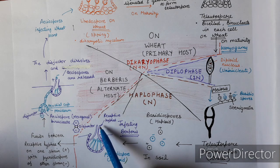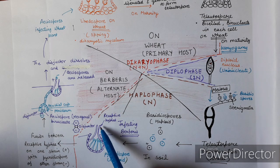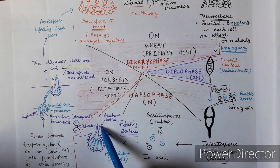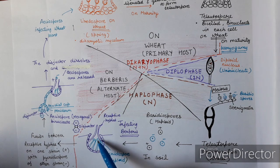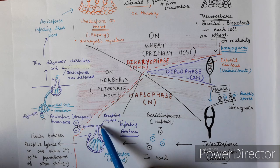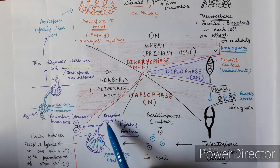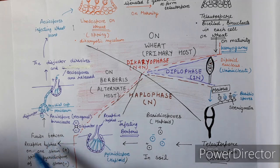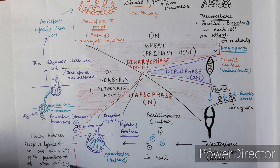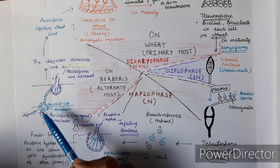The pycnidiospores are carried away by insects. When the pycnidiospore fuses with the receptive hyphae, it gives rise to a dikaryotic mycelium, because both structures are haploid. The receptive hyphae may be of positive strain and the spores of negative strain, so fusion takes place between opposite strains, giving rise to a dikaryotic mycelium.